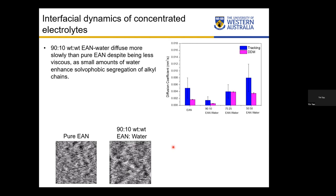A further question was raised about whether video rate AFM is possible on rougher samples, such as textured silicon with scan areas of 50 to 60 microns and RMS values greater than 100 nanometers. The largest scan range for the VRS is 20 micrometers by 20 micrometers, and the height range is typically below 100 nanometers, so such rough samples are not currently feasible.